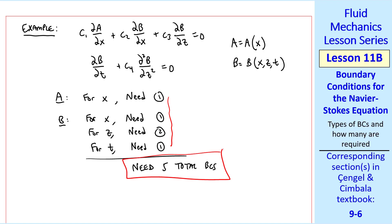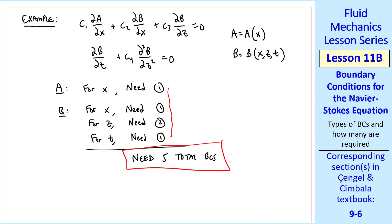Keep in mind that I'm using the term boundary condition to also mean initial conditions when we have time involved. I'm treating x, y, z, and t all as coordinates here, because mathematically these are all independent variables, and A and B are dependent variables. Knowing the correct number of required boundary conditions is important when we do fluid flow problems where we're solving the Navier-Stokes equation along with the continuity equation, especially when we have several variables, and if it's 3D and unsteady, our variables will be functions of x, y, z, and t.